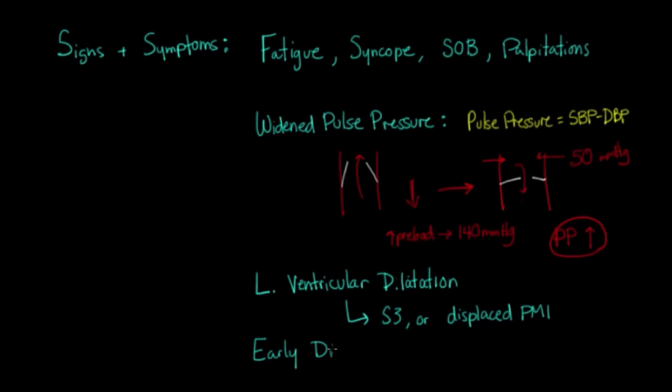Aortic regurgitation can be heard on auscultation as an early diastolic murmur along the left sternal border.